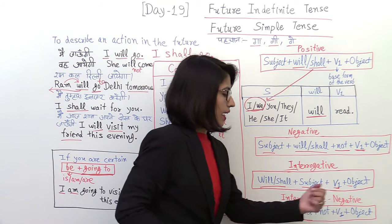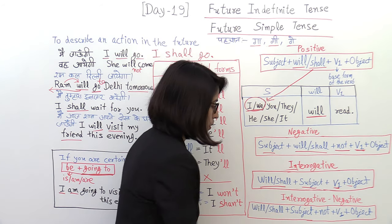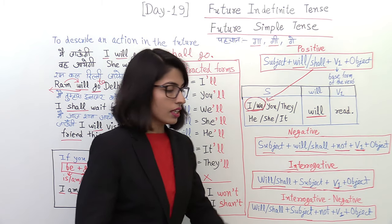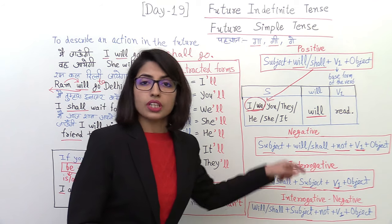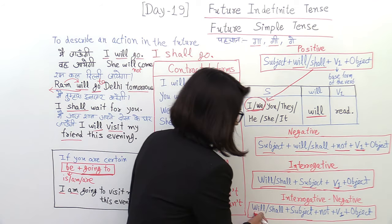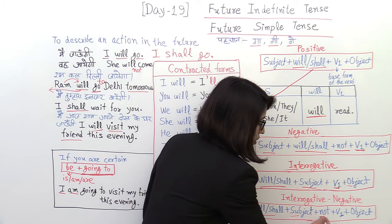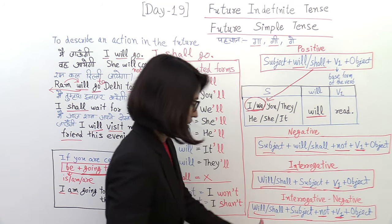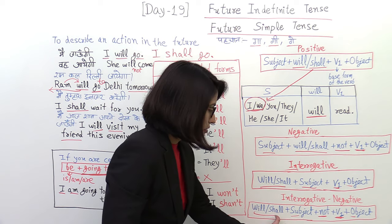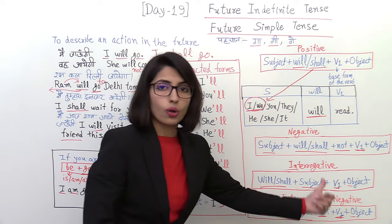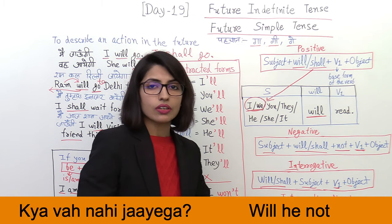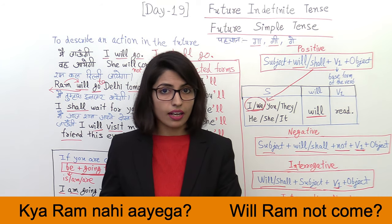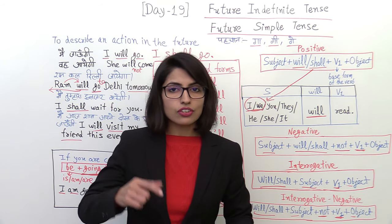Then we come to interrogative negative sentences. As I told you that helping verb and main verb, not comes between. But in interrogative, because helping verb is first, then subject, after that not. So will or shall, then subject, then not, then base form of the verb, then other things. Will he not go? Will Ram not come? This way you have to make interrogative negative.